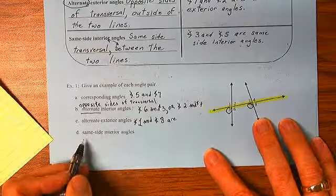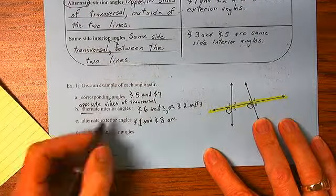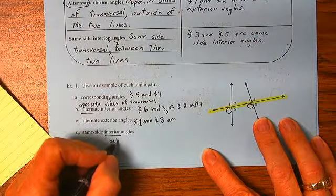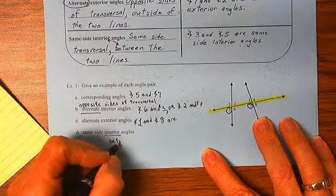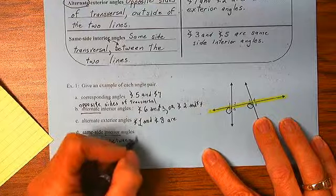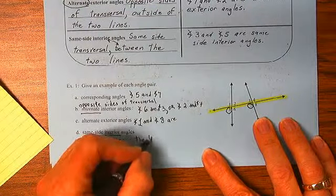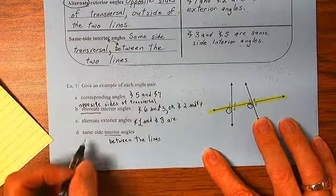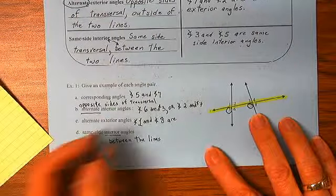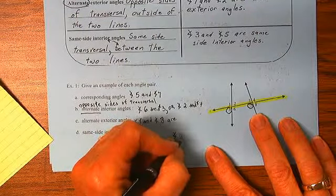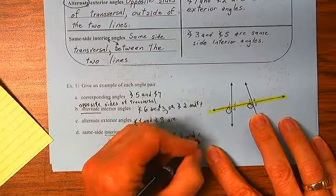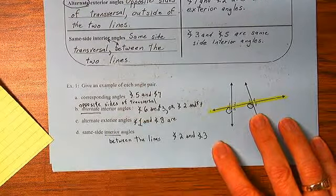And finally, same side interior. Interior between the two lines. Same side interior, 2 and 3. Good.